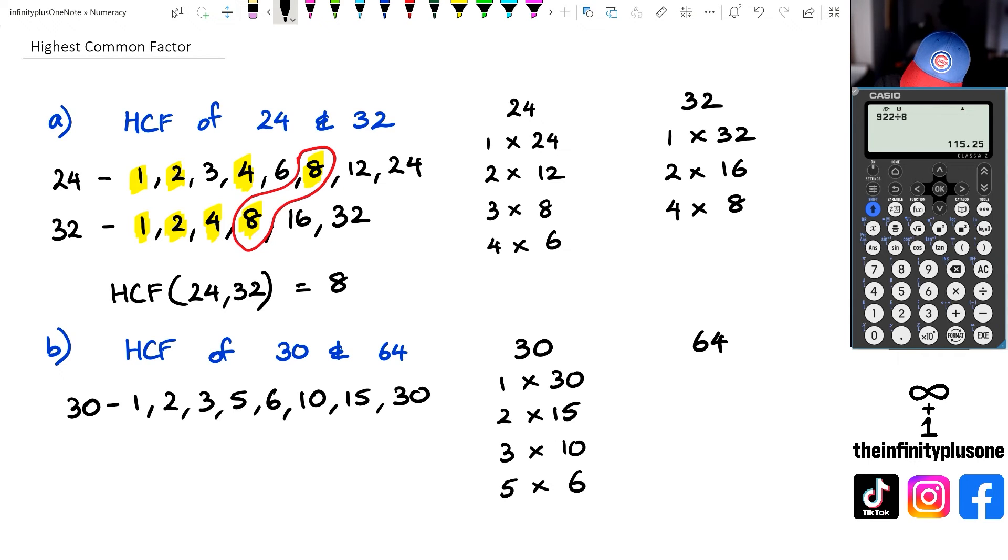Next I'm going to write down all the factors of 64. What do we got? We've got 1 times 64. 2 times 32. 3 doesn't work. 4 times 16. 5 doesn't work. 6 doesn't work. 7 doesn't work. And we've got 8 times 8. Now once I've done this I'm going to write down 64's factors which is going to be 1, 2, 4, 8, 16, 32 and 64.